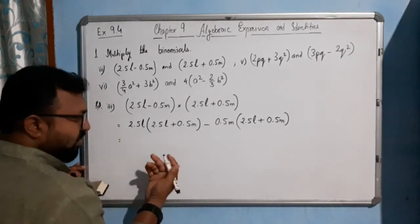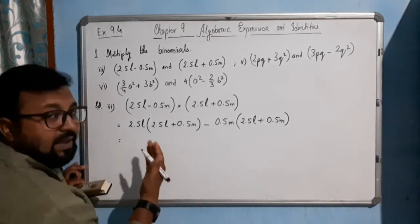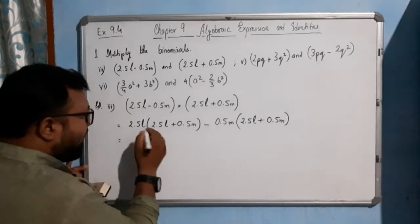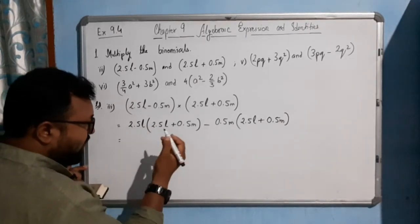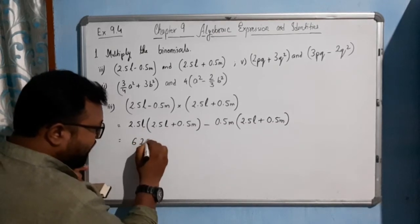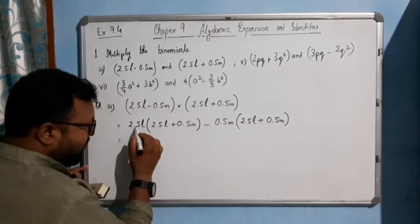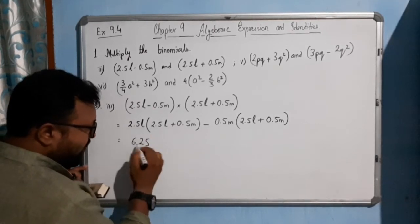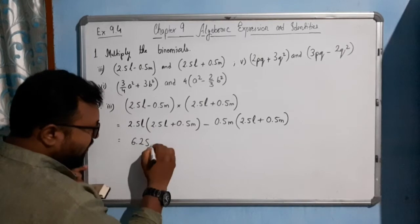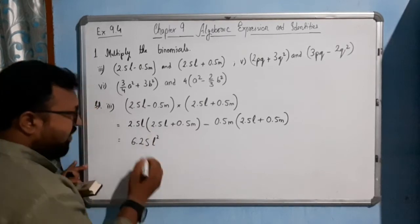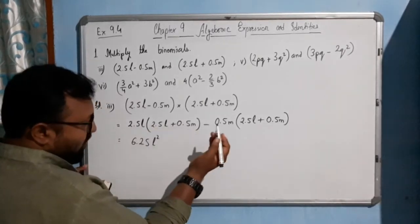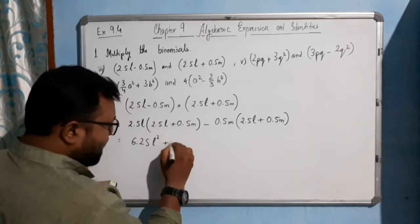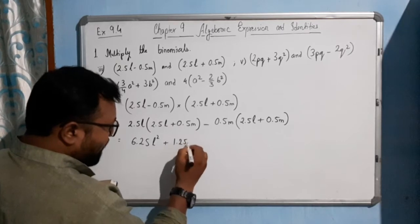Now, as I told you, first multiply the sign, then multiply the constant, and then go for the variable. 2.5 times 2.5 gives 6.25, so we get 6.25L squared. Then 2.5 times 0.5 gives 1.25, so we get plus 1.25LM.